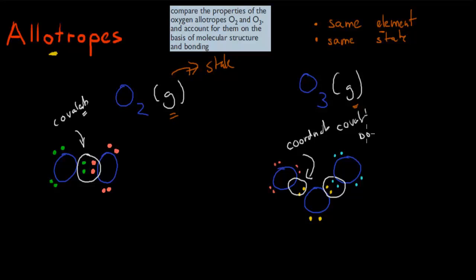I mention all this because the dot point itself says: compare the properties of oxygen allotropes. So now you should know what an allotrope is — O2 and O3. This means we're talking about gaseous oxygen and gaseous ozone, not liquid oxygen or liquid ozone. We're going to compare the properties of oxygen allotropes O2 and O3, and account for them on the basis of their molecular structure and bonding.